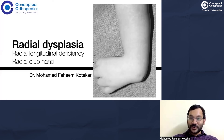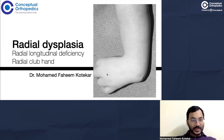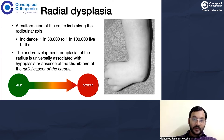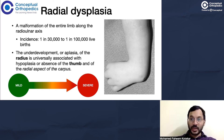From an exam point of view it's a very important topic, and also from a practice point of view this is one of those things that you're going to see and may also treat. Radial club hand, or radial dysplasia, or radial longitudinal deficiency is a deficiency of the limb on the pre-axial side — a malformation of the entire limb along the radial-ulnar axis where the pre-axial deficiency exists. That means the radius, the radial side of the carpal joint, and the thumb are either underdeveloped or absent altogether.